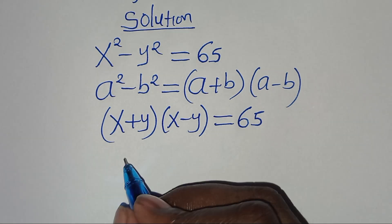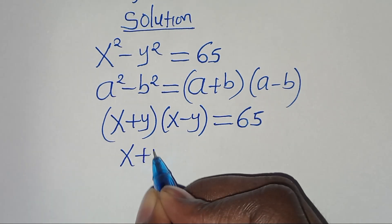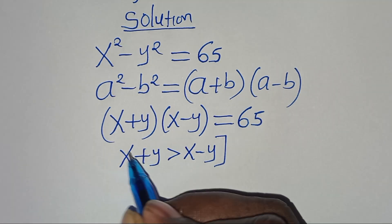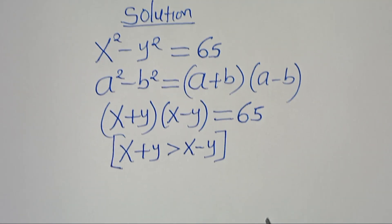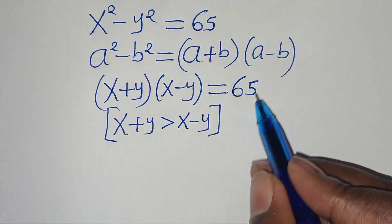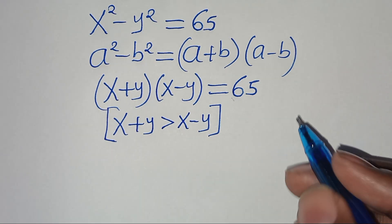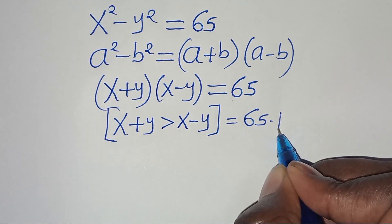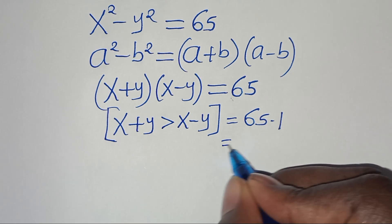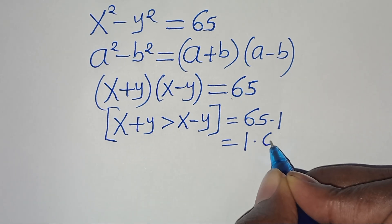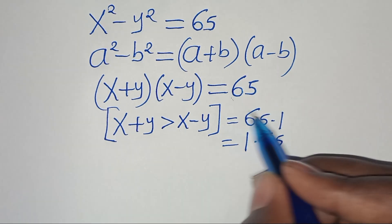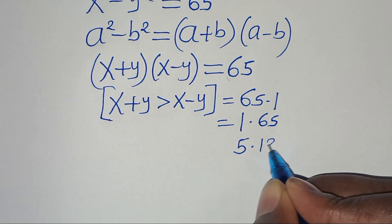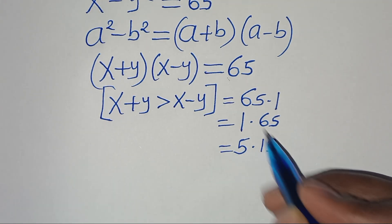Now, we have that x plus y is greater than x minus y. So let's get the prime factors of 65. We have 65 multiplied by 1, which gives us 65. Then we have 5 multiplied by 13, which also gives us 65.